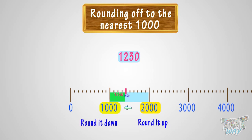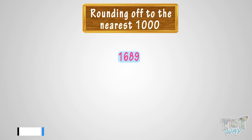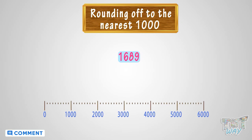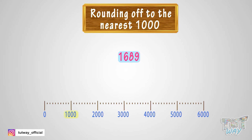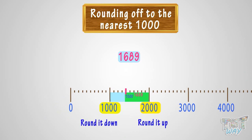Now let's take another example, 1,689. We have to round 1,689 to the nearest 1,000. Where can you fit 1,689 on this number line? It is somewhere between 1,000 and 2,000. As 1,689 is above or after the 500 mark, so we will round it up to 2,000.